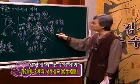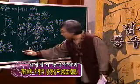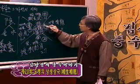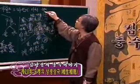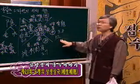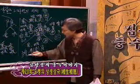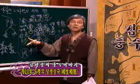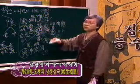동대문의 흥인지문, 남쪽의 남대문 숭례문 이런 식으로 이야기되어 있습니다. 목의 기운은 어질 인(仁) 자, 남쪽에는 예절 예(禮), 중앙에는 믿을 신(信), 서쪽에는 의로울 의(義), 북쪽에는 지혜 지(智) 자를 써서 다섯 가지로 구분하기도 합니다. 이 글자에 맞춰서 동대문 흥인지문, 남쪽 숭례문, 종로의 보신각, 서대문 돈의문, 북문 홍지문이 만들어졌습니다.